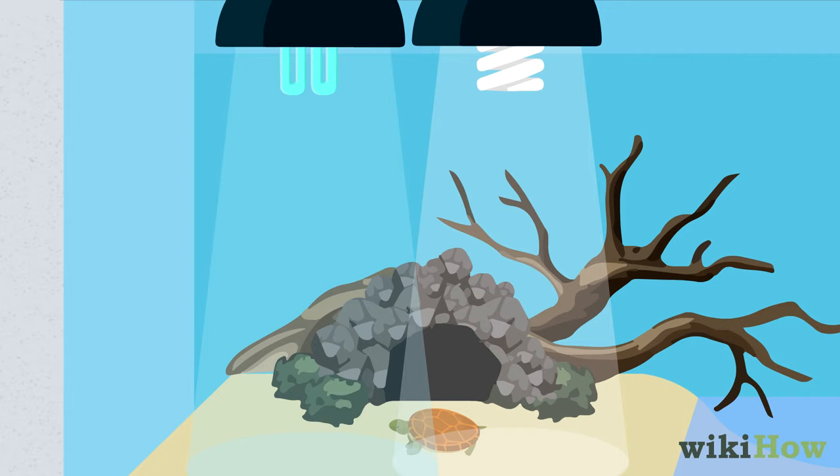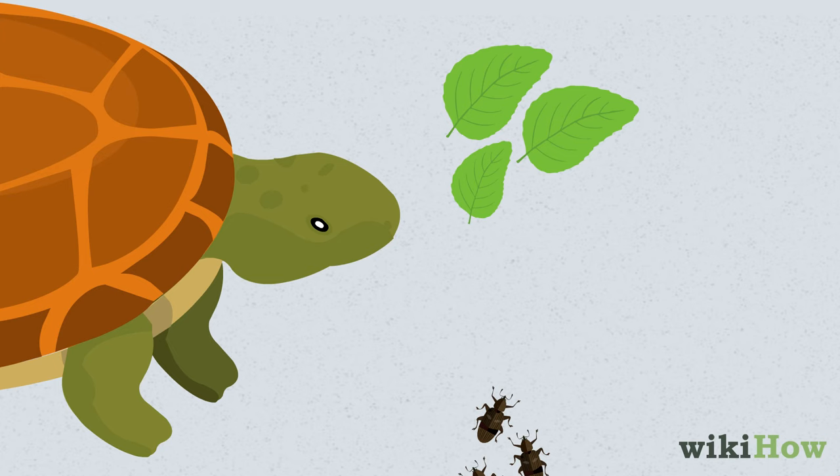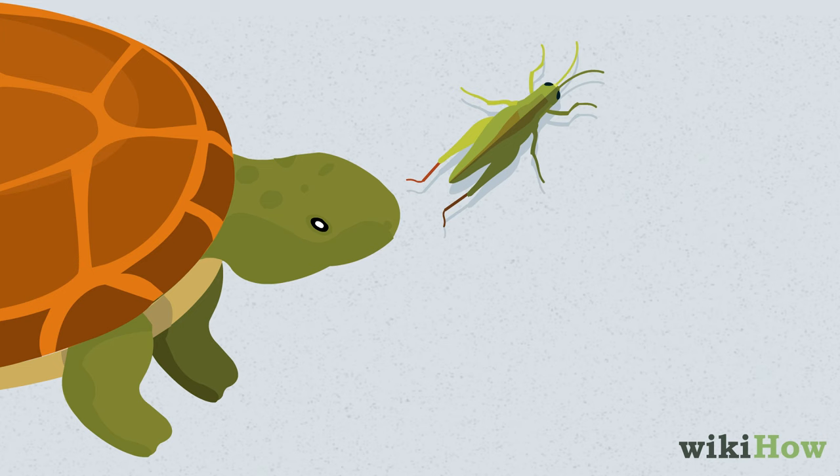Feed your turtle a variety of leafy green vegetables, insects, and prepackaged turtle food. You can also give them live food, like crickets, mealworms, or feeder fish, as a treat every once in a while.